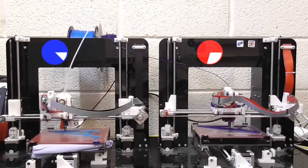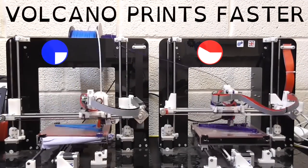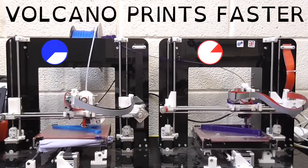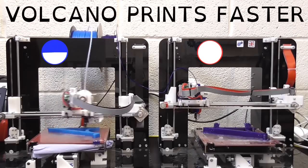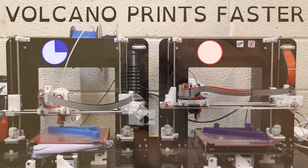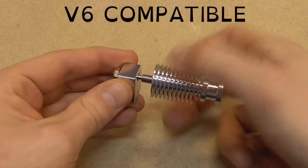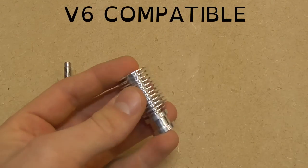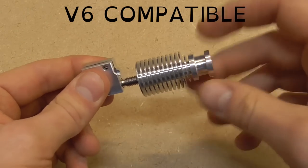The Volcano upgrade has a larger nozzle and a longer melt zone so you can extrude faster. All you need to upgrade your V6, Chimera or Kraken is one of our easy swap out Volcano kits, the next addition to the E3D ecosystem.